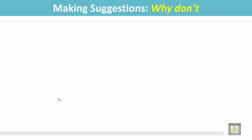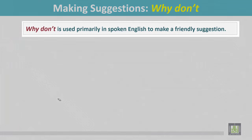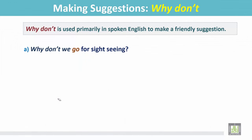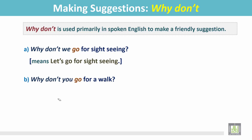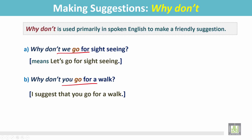Making suggestions: 'Why don't' is used primarily in spoken English to make a friendly suggestion. For example: 'Why don't we go for sightseeing?' — the person is making a suggestion; it means 'Let's go for sightseeing.' 'Why don't you go for a walk?' means 'I suggest that you go for a walk.' In both sentences the verbs are in the present simple form.